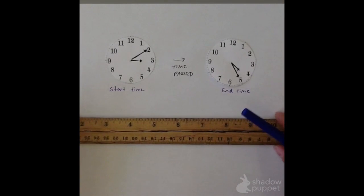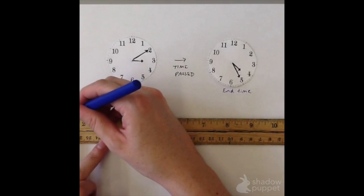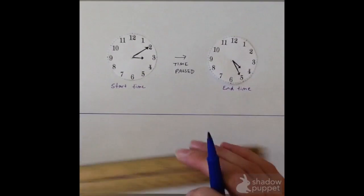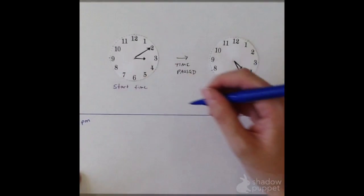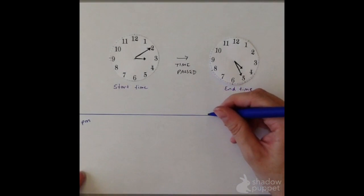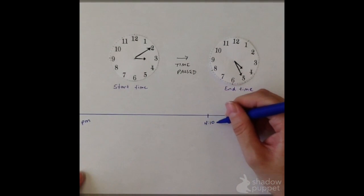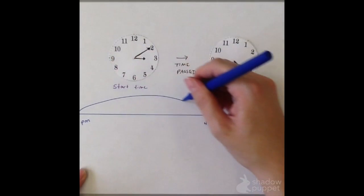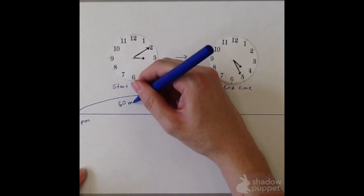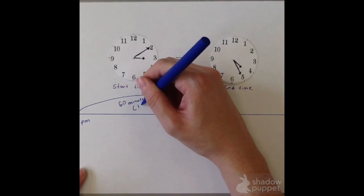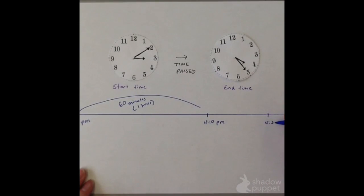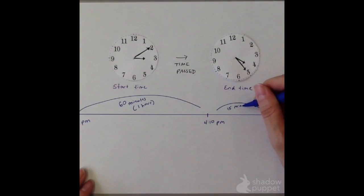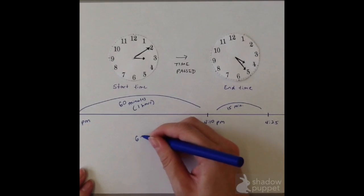Another way to calculate the elapsed time with an open timeline is to once again start off by plotting my timeline and making note of the starting point, which is 3:10 p.m. But this time around, I'm going to add an hour to 3:10. I know that 3:10 plus 1 hour would get me to 4:10 p.m. And remember, an hour is equal to 60 minutes. So once I get to that 4:10 marker, I can think, what would be the difference from 4:10 to 4:25 p.m.? And that would actually be 15 minutes, because if I were to subtract 10 from 25, that would be 15.